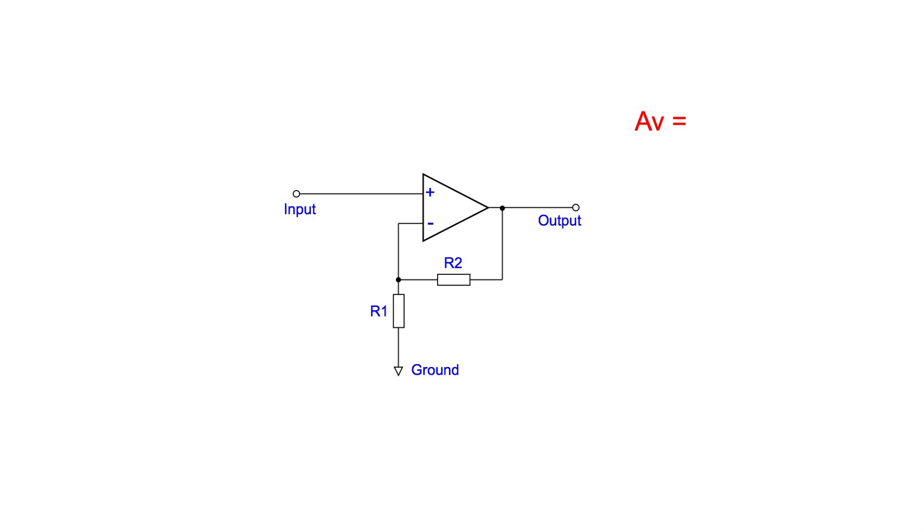If we want to calculate the gain we use the formula 1 plus R2 divided by R1. So let's take an example of designing an amplifier with a gain of 11. We could choose R1 to be 1k and then slotting in all the figures we can see that R2 works out to be 10k.